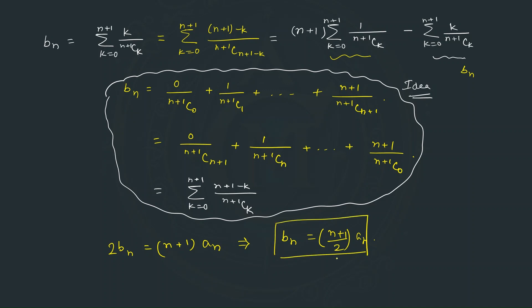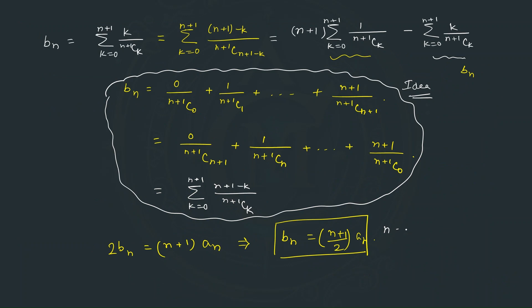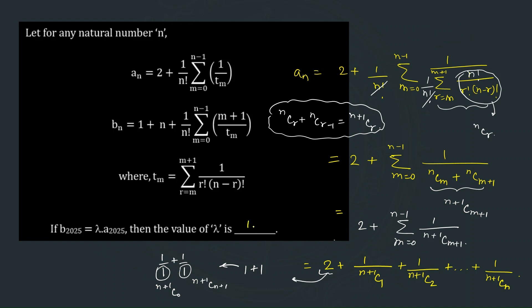This is the relation between bₙ and aₙ. We are asked for the ratio b₂₀₂₅ divided by a₂₀₂₅, so we put n equal to 2025. This gives b₂₀₂₅ equal to 2026 divided by 2, which is 1013 times a₂₀₂₅. Therefore λ equals 1013, and that is the correct answer for this question.